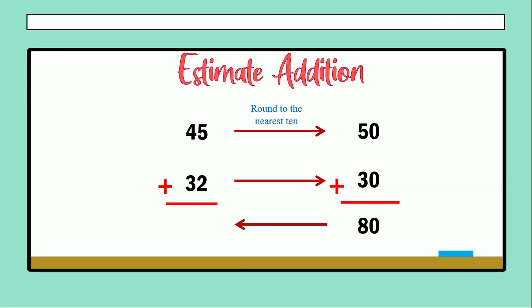5 plus 2 is 7, and 4 plus 3 is again 7, so the exact answer is 77. If we round 77 to the nearest ten, 77 is between 70 and 80 — the nearest is 80. For that reason, the estimate addition is 80.